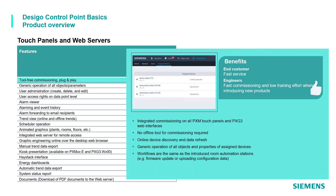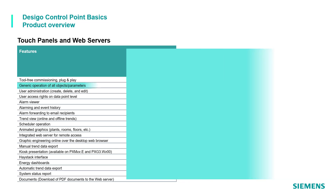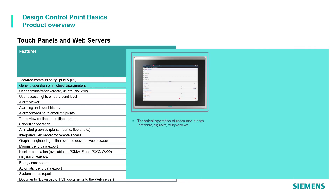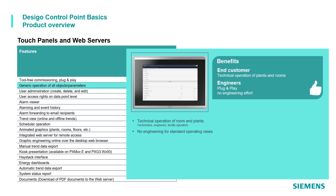Tool-free commissioning, offered by all device types, does not require any tool for commissioning, gives the possibility to discover other devices online, provides generic operation of all objects and properties of assigned devices, and the workflows are the same as the introduced room automation stations. This improves fast service and commissioning.